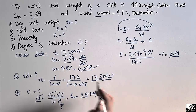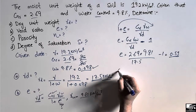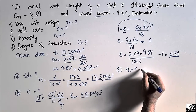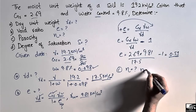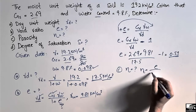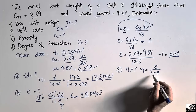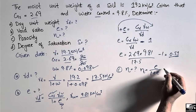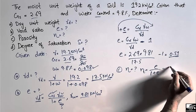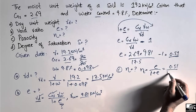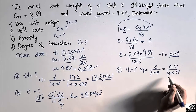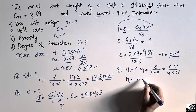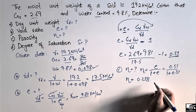Part C: find the porosity n. The basic relation between porosity and void ratio is: n = e / (1 + e). With e = 0.51: n = 0.51 / (1 + 0.51) = 0.51 / 1.51 = 0.338. So the porosity of the soil sample is 0.338.